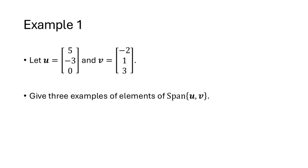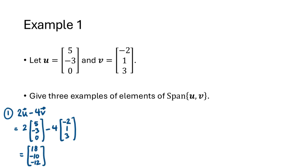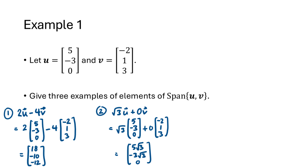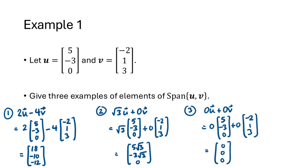Let's work through an example. Given two vectors u and v, let's construct three examples of elements of span{u, v}. We could choose scalar 2 for u and negative 4 for v, giving the linear combination 2u minus 4v, which equals the vector (18, −10, −12). We could choose scalar √3 for u and 0 for v, giving the vector (5√3, −3√3, 0). And we can choose 0 for both scalars, which gives us the zero vector — also an element of span{u, v}.